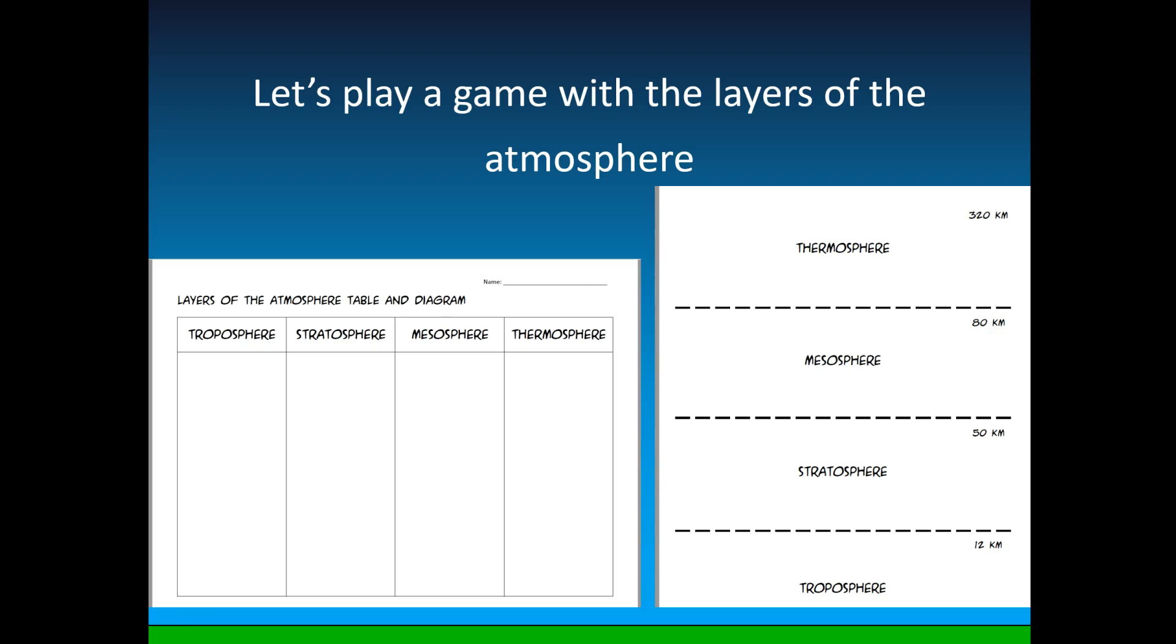To help us get started, we're going to play a game. In class, this would be a game, but for you watching this podcast, it's really just a little trivia quiz for you. For this section of the podcast, pull out your notes that have layers of the atmosphere table and diagram and this is what it looks like. On this first sheet with the boxes, you can take notes on each layer of the atmosphere. On the other paper with the lines, you can draw pictures to help you remember what happens in each layer. So let's get started with our little quiz.